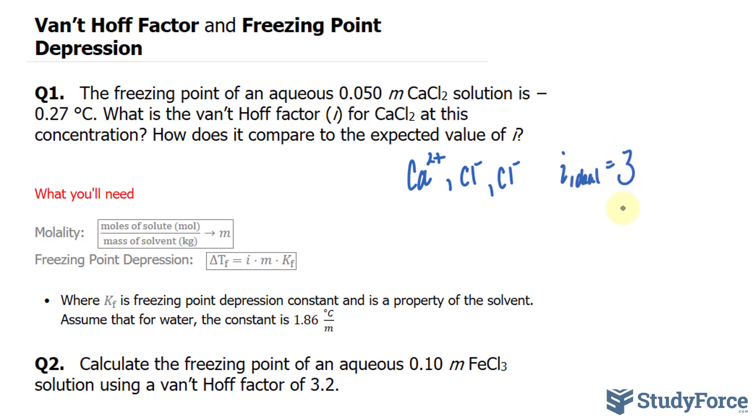The formula that we'll be using is shown right here, and it's actually very similar to what we looked at before, the freezing point depression. But unlike before, we actually are using the Van't Hoff factor. So to answer this part, how does it compare to the expected value of i? Let's go ahead and solve for i.